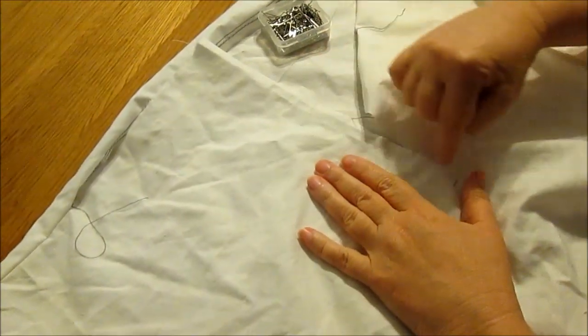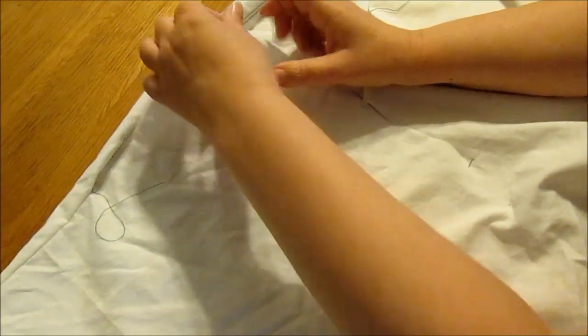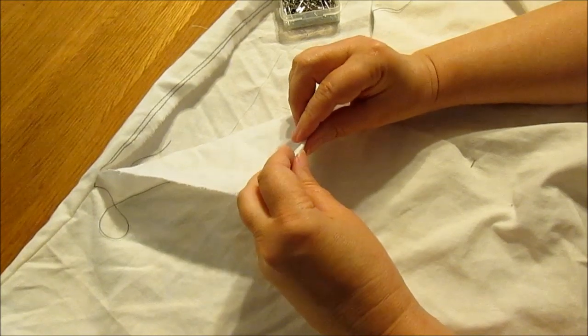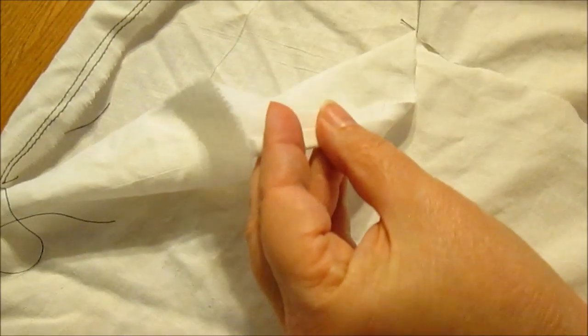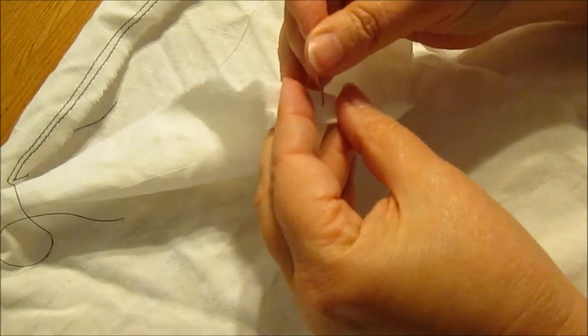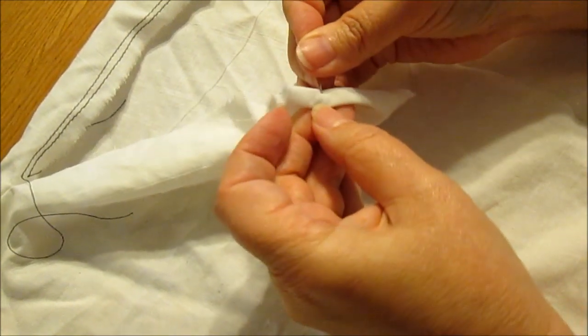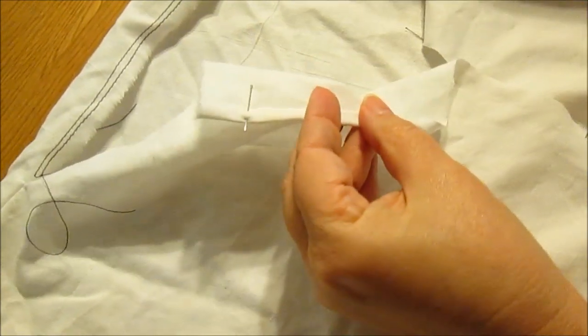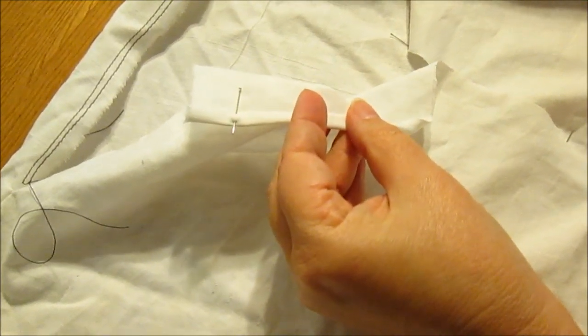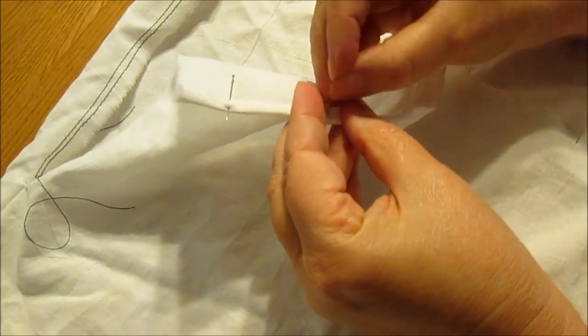That is set in. So here's the neckline. Here's that 10 inch slash that we cut. What I'm going to do is I'm going to take this. I'm rolling it under two rolls so the edge of the fabric is encapsulated. And I'm going to pin it as I go.